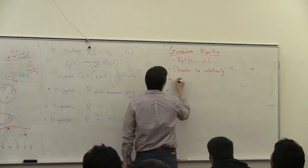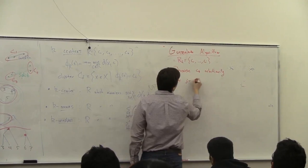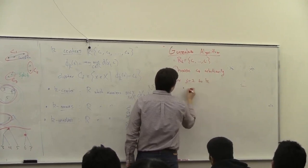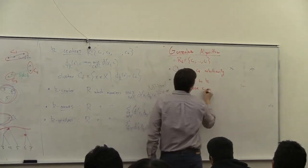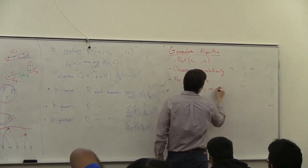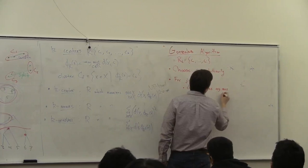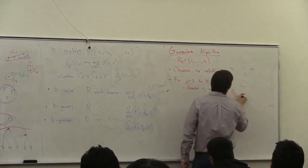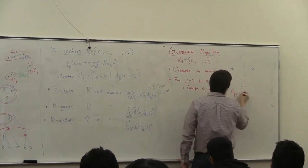And now, for j equals 2 to k, choose Cj as the point that maximizes distance to the nearest existing center.